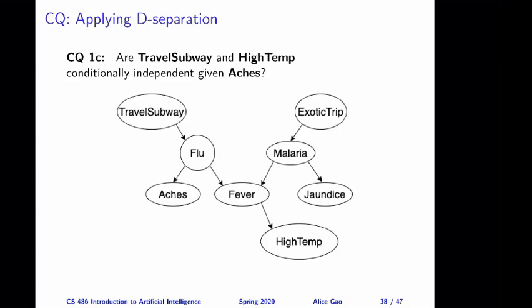This question asks about the relationship between travel_subway and high temperature, except that we now observe x. I'm going to leave the reasoning as an exercise for you, but I will tell you the answer: travel_subway and high temperature are not conditionally independent given x. The key is that we apply rule 1 twice to figure out whether any node blocks the path, and it's important to realize that observing x does not affect anything between these two variables.